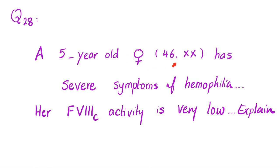There's only one problem: Turner syndrome will not be 46XX. Turner syndrome, in fact, will be 45, XO — or written as 45 plus XO, where O stands for zero, meaning no second sex chromosome.